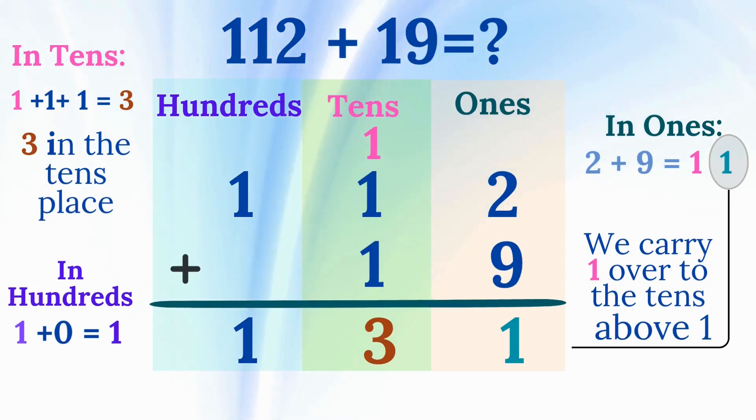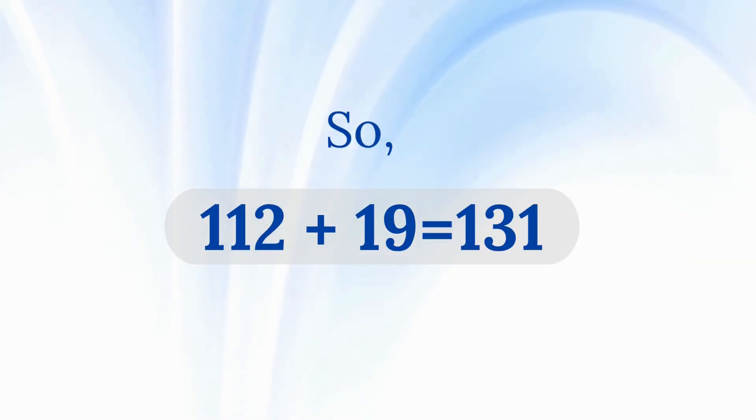Now we add the tens place. 1 plus 1 plus 1 equals 3. So we write 3 in the tens place. Now add the hundreds place. 1 plus 0 equals 1. We write 1 in the hundreds place. The total is 131. So 112 plus 19 equals 131.